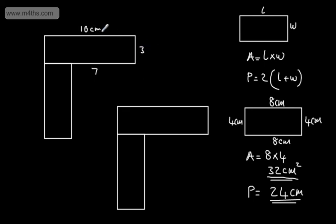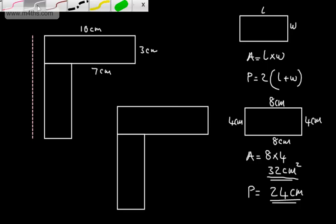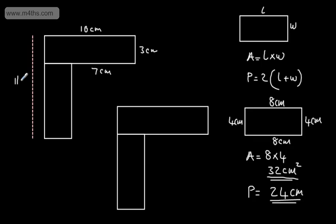We'll label those as centimetres. We might also be told that this entire length is 11 centimetres. The first thing I like to do is add on the unknown sides. Since the total is 11 and one part is 3, the missing part must be 8 centimetres. Since the total height is 10 and one part is 7, the missing one must be 3 centimetres.